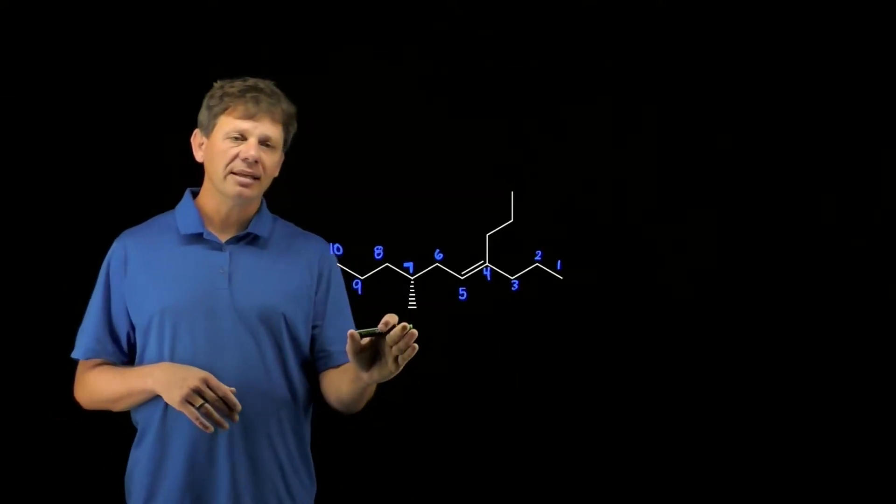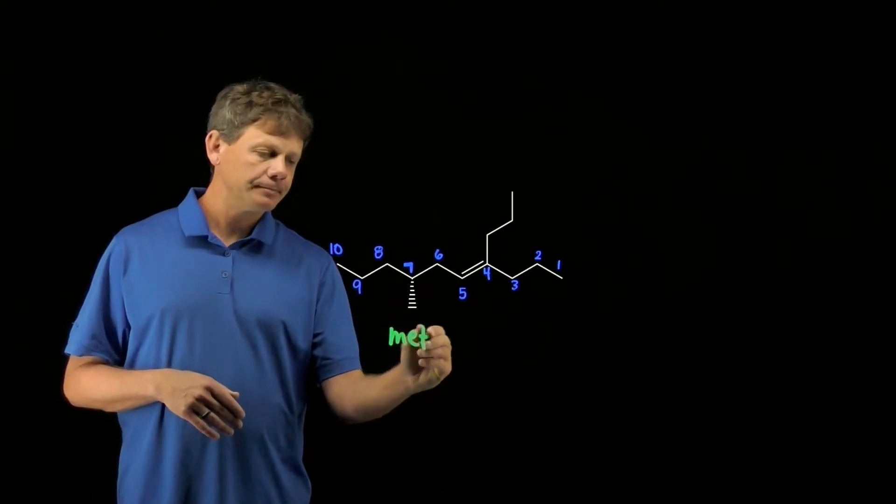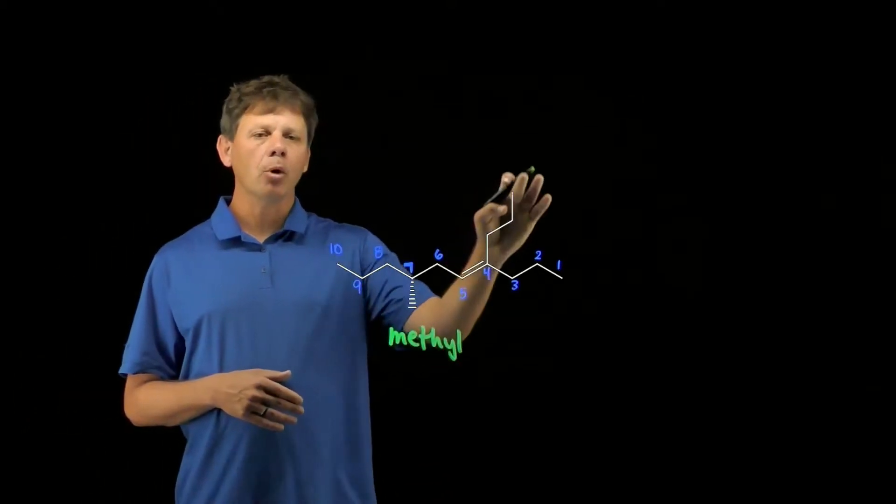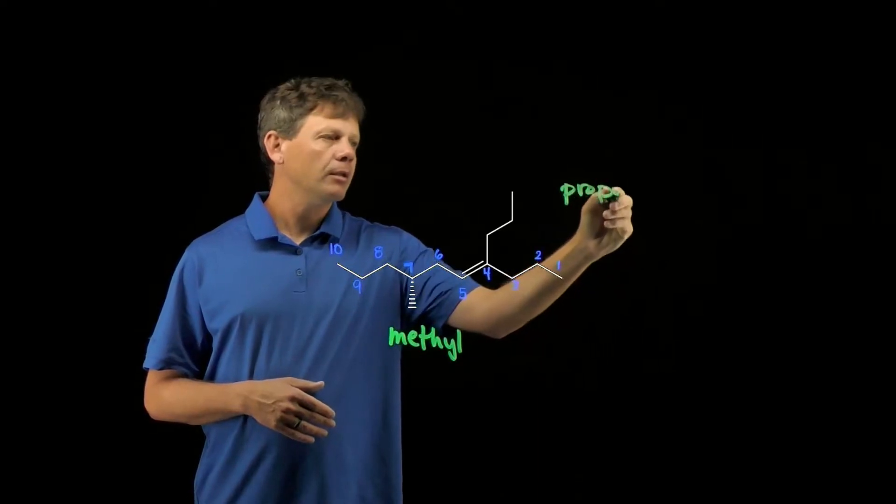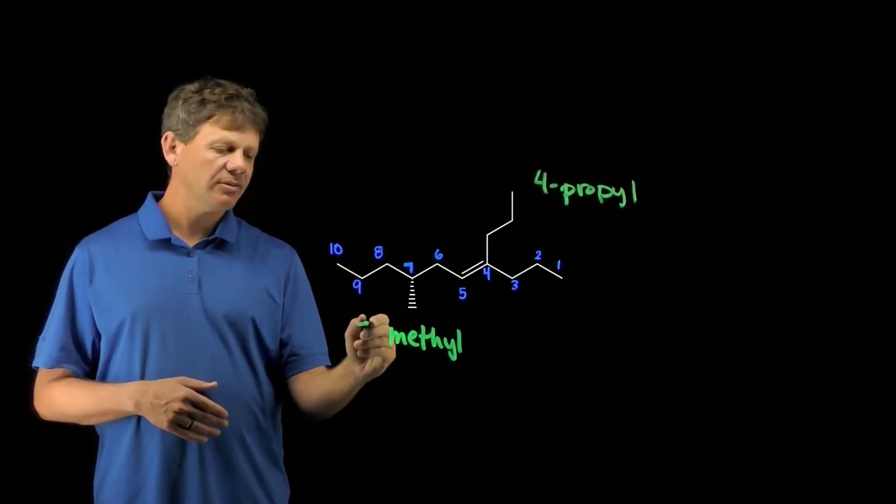From there we can just identify the substituents that we have. We have a methyl group coming off of the seven carbon. We have a propyl group coming off of the four carbon. So this is going to be a four propyl and a seven methyl.